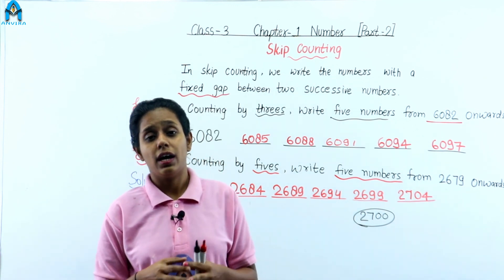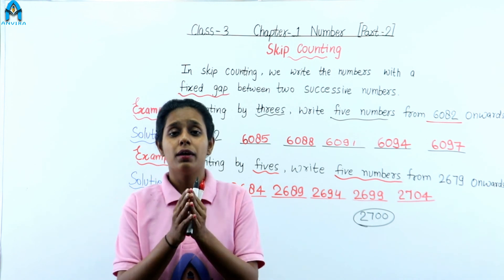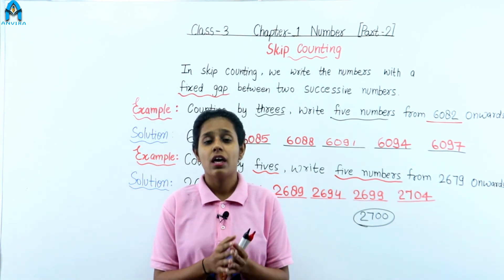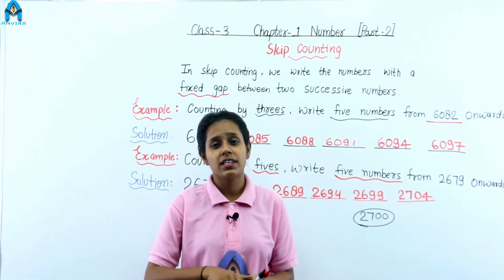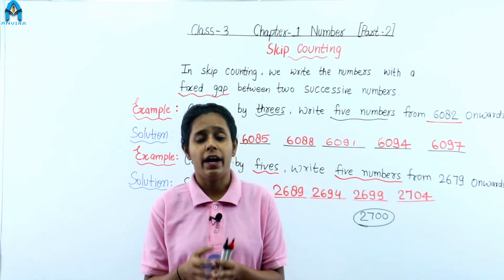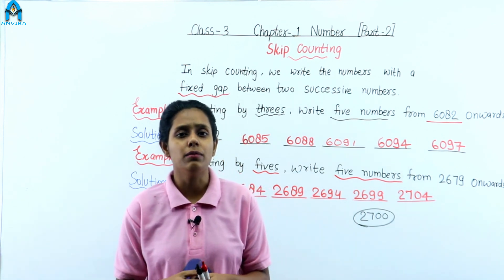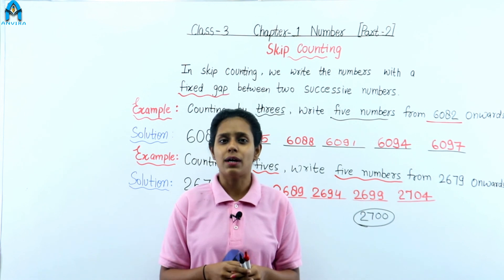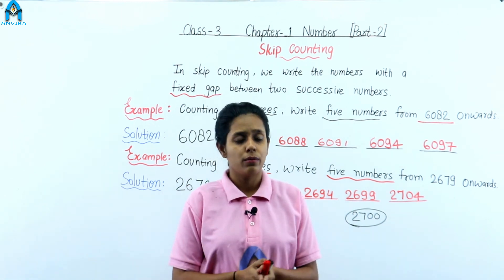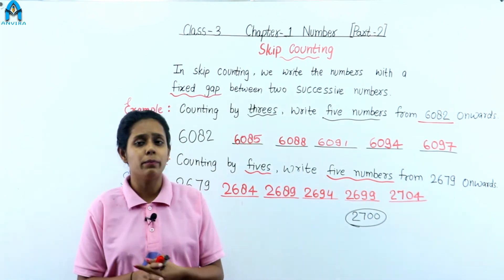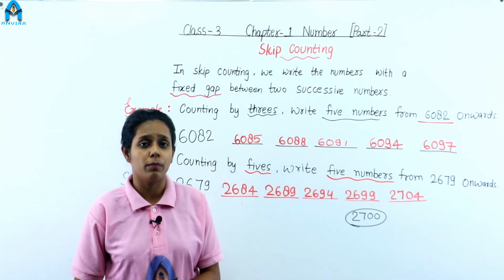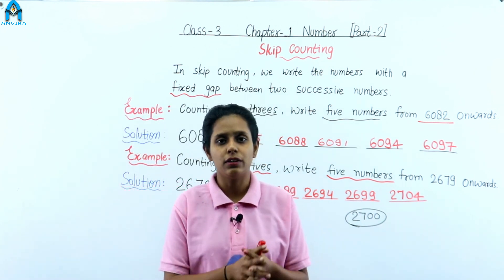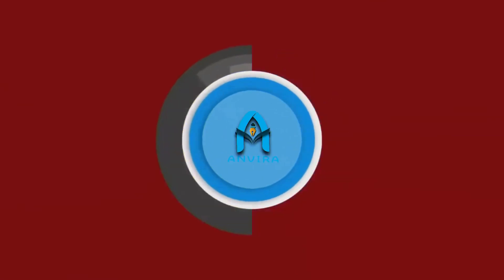So we learned about four digit numbers, place values, number names, expanded form, and many more things. Now let's do some practice. We will do some practice for all these topics in our next part. Thank you.